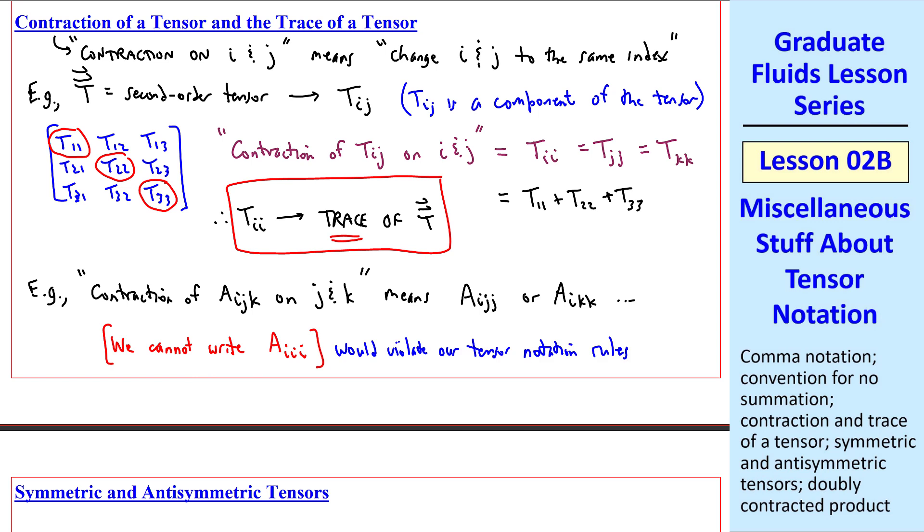You can't have more than two repeated indices in the same term. In other words, you're free to choose any repeated index you want when you contract. Typically, you pick one of these. But I can also write aill, if I wanted, as long as you don't violate any tensor notation rules.